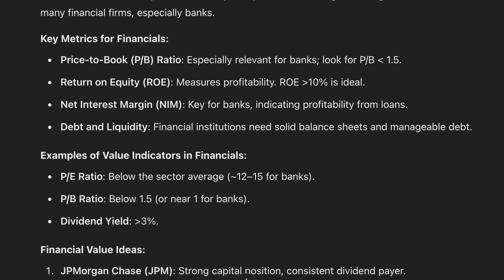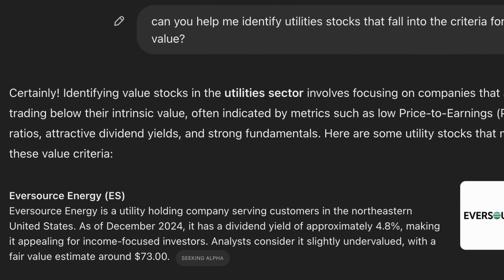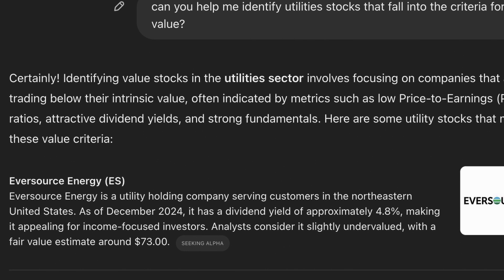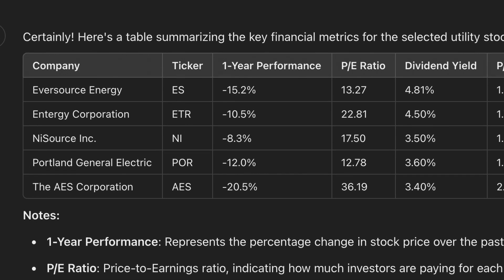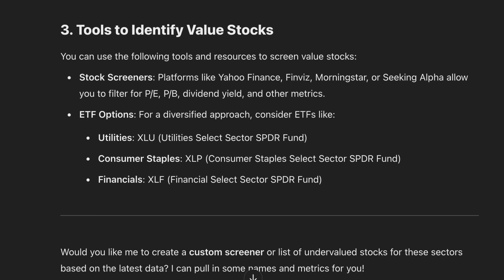After looking at all three sectors, I decided I wanted to drive deeper into utility stocks. So I asked: can you help me identify utility stocks that fall into the criteria for value? Those were the criteria ChatGPT had already outlined for me. It spit out a group of five stocks that met the criteria for value. We had already turbocharged the process of identifying stocks just by asking ChatGPT, instead of going to a stock screener or creating a watchlist on a brokerage platform where we'd have to manually decide what criteria to use.